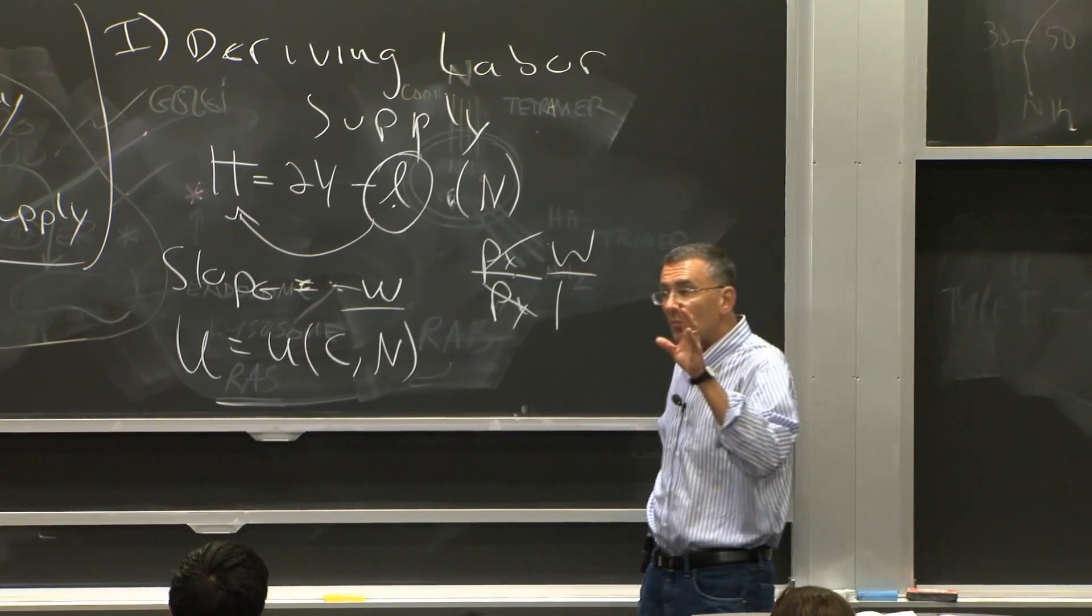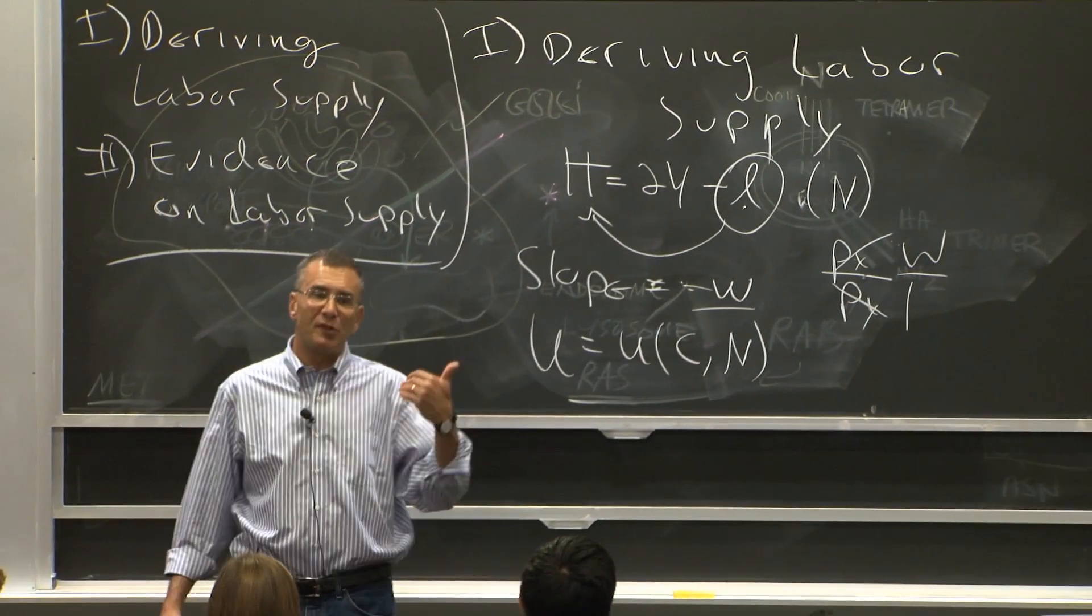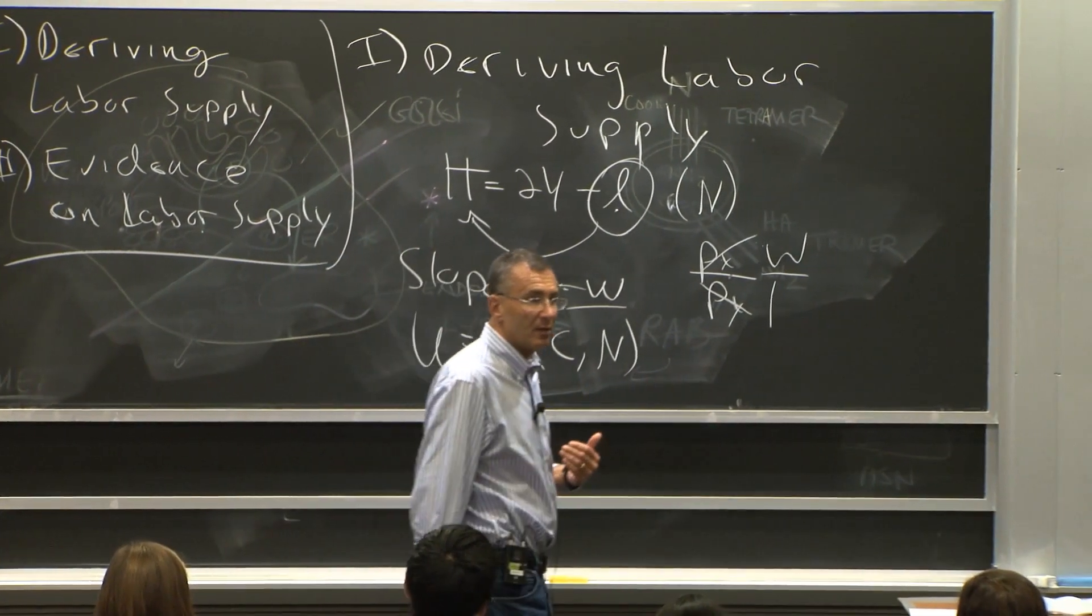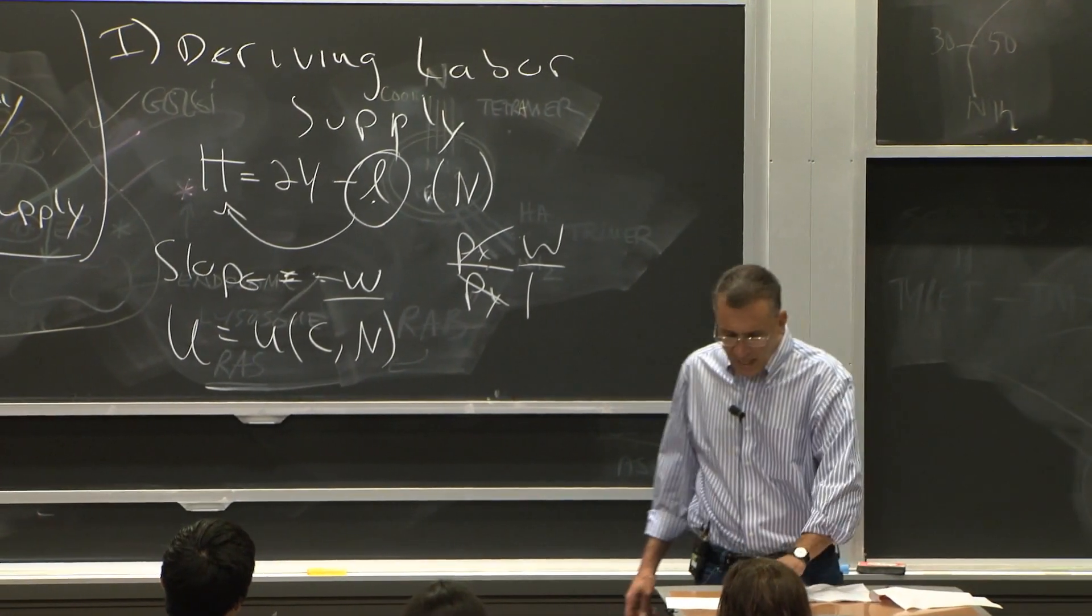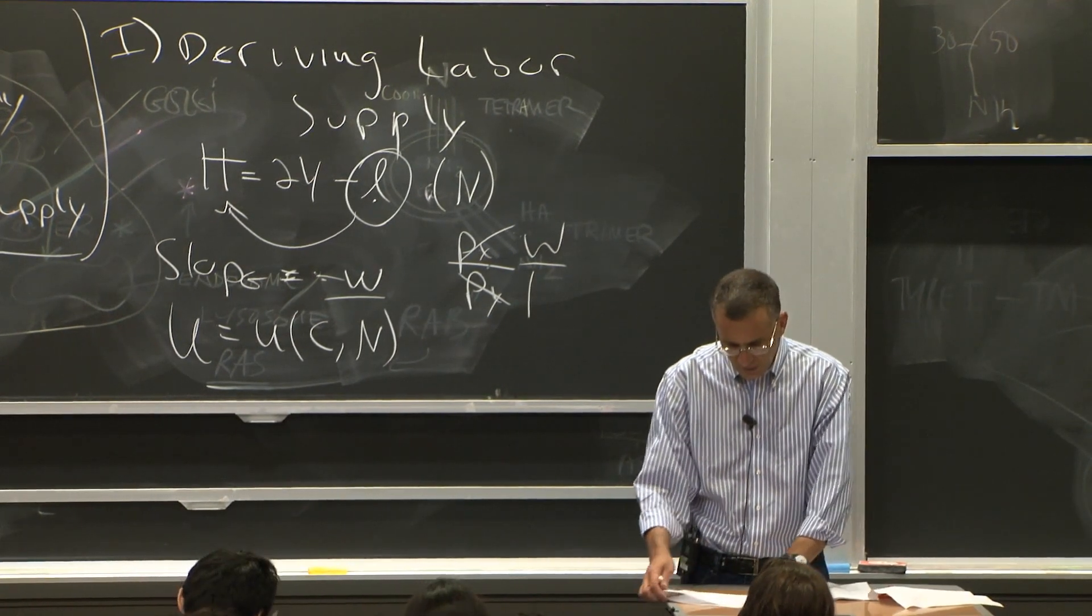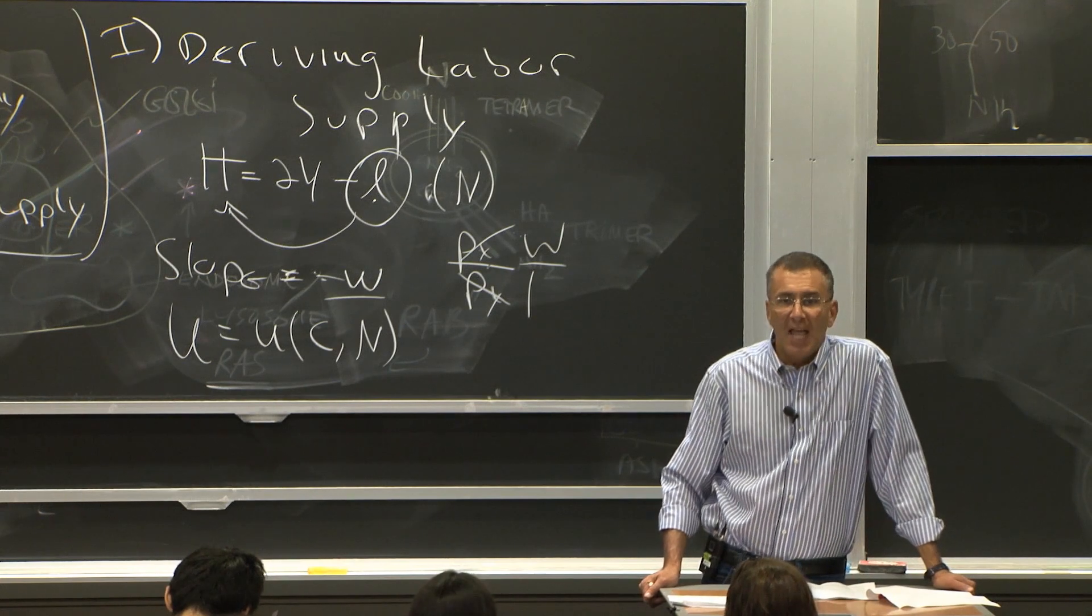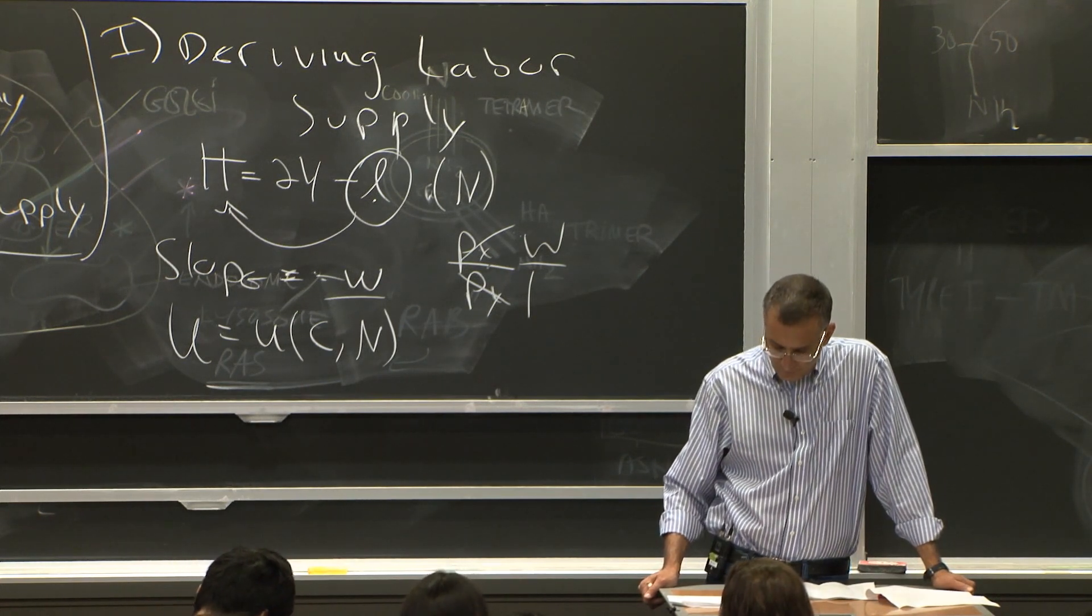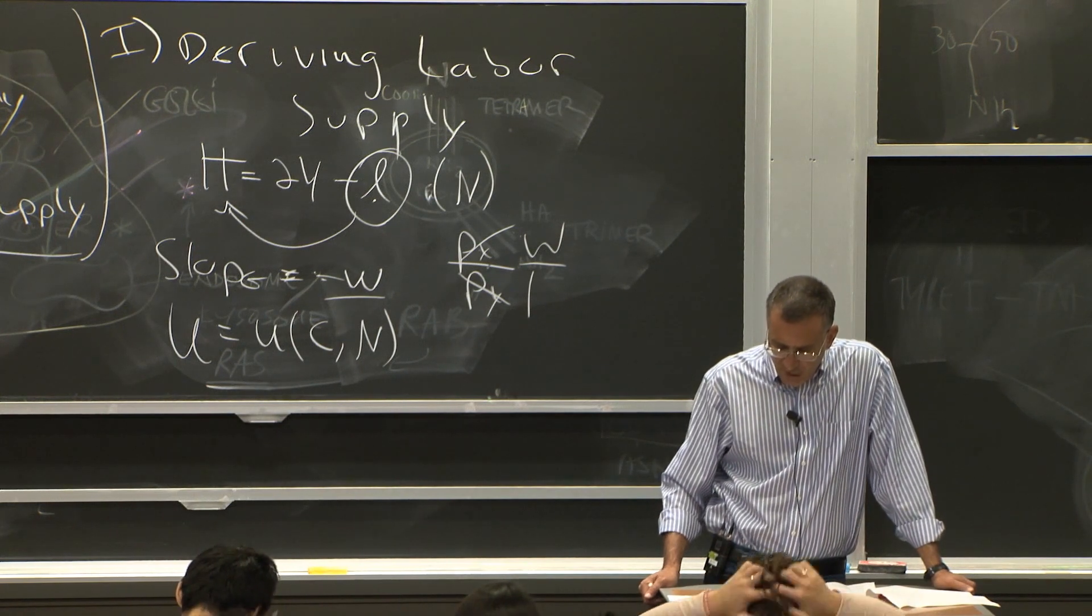All right. So now, since you understand that, now we get to talk about why income and substitution effects are so interesting. Okay? And to do that, we look at figure 7-2 and look at income and substitution effects on the leisure decision and therefore the labor supply decision. So let's start with an initial budget constraint, BC1.